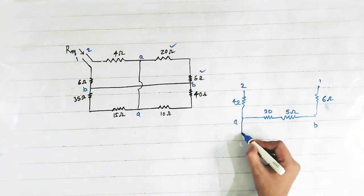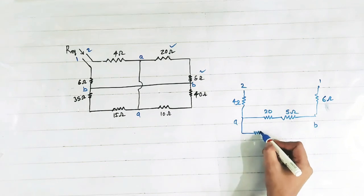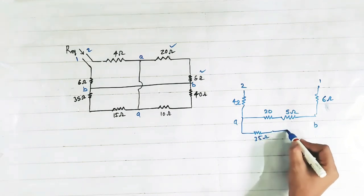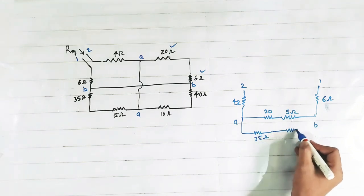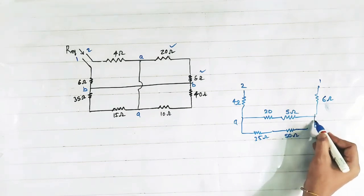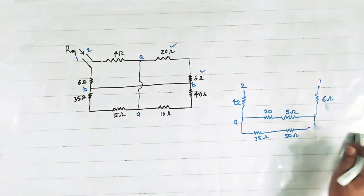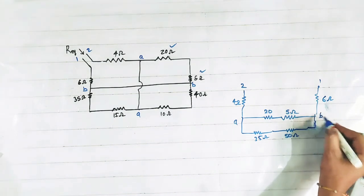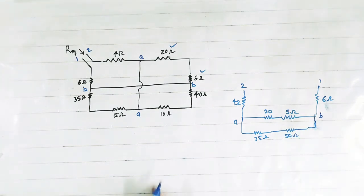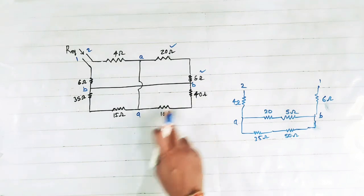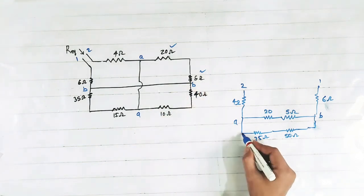So we will connect the 35 ohm and this 50 ohm. Now see this 10 ohm and 40 ohm are again connected between A and B.